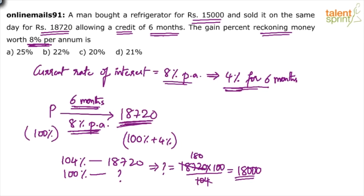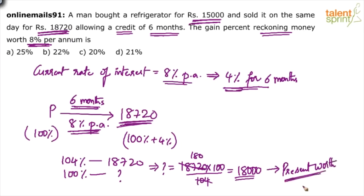Now come back to the actual situation. What happened? I spent 15,000 rupees in the shop. As soon as I came out of the shop, I gave the refrigerator to somebody else, and that somebody else paid me 18,720 after six months — which means the present worth of 18,720 after six months is 18,000 rupees. You understand the meaning of present worth? What will be 18,720 after six months is 18,000 rupees today. Or: what is 18,000 rupees today will become 18,720 after six months.